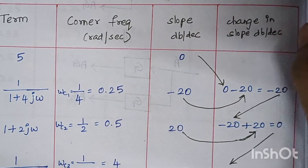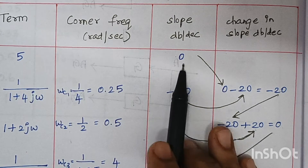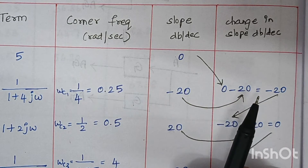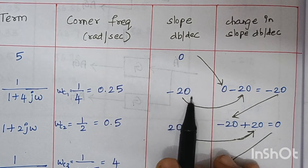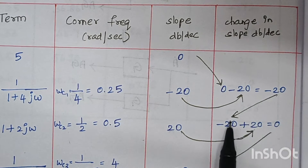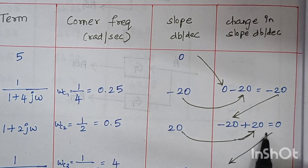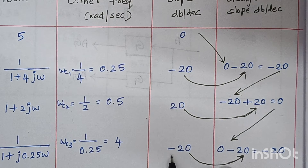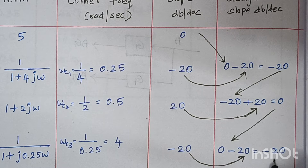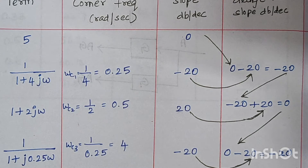To find the change in slope: the constant term contributes no slope, so its value is 0. The slope value is carried forward and the new slope is added. So 0 + (−20) = −20. Then −20 + (+20) = 0. Finally, 0 + (−20) = −20. This table is the basic foundation for constructing the magnitude plot, and each step must be written correctly.